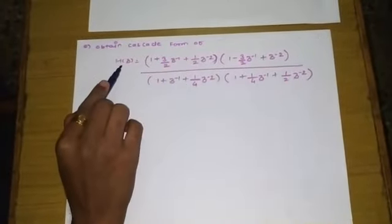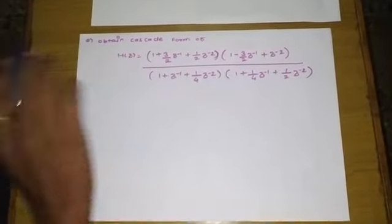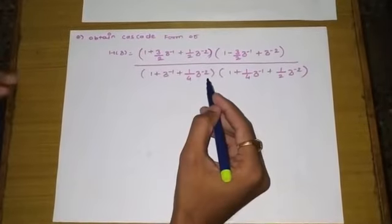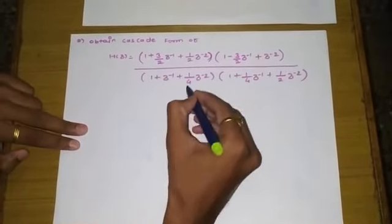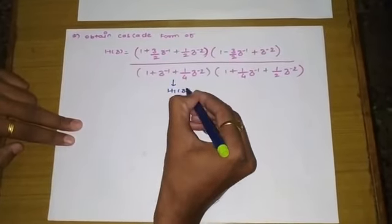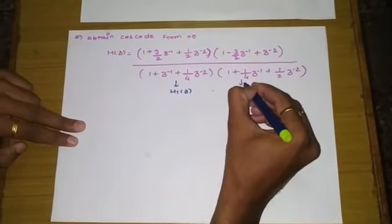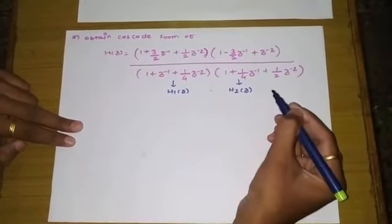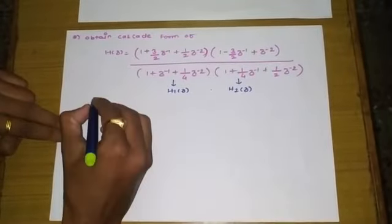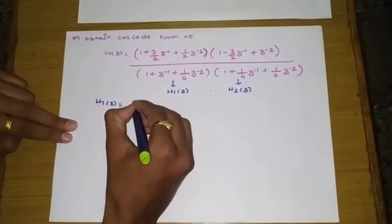The question asks to obtain the cascade form realization of a given system transfer function. We divide the transfer function into two systems: the first segment is assumed as H1(Z) and the second segment as H2(Z). We then apply direct form 2 realization and cascade them. H1(Z) is taken as the first subsystem.